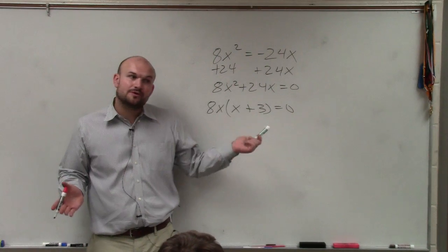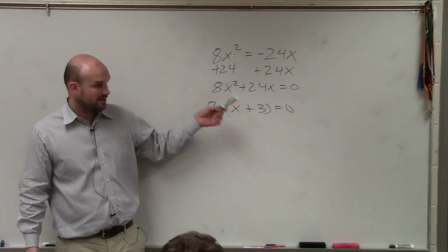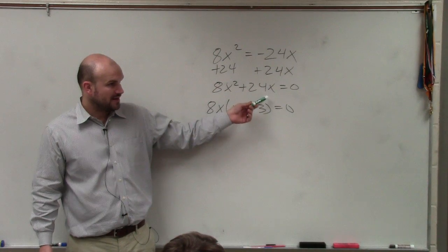And if you don't know if you did it right, always go back and check your answer. You can apply distributive property. 8x times x is 8x squared. 8x times 3 is 24x.